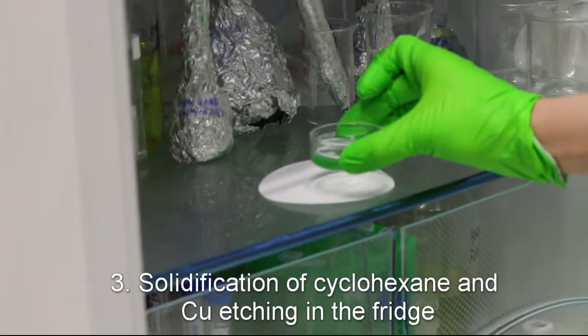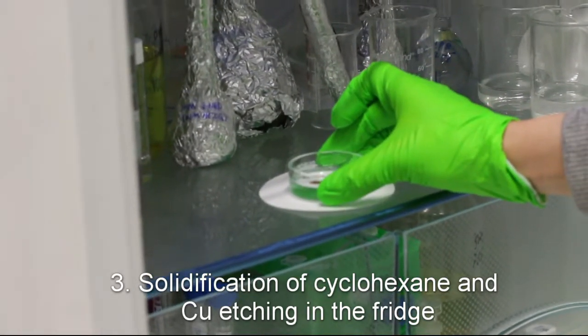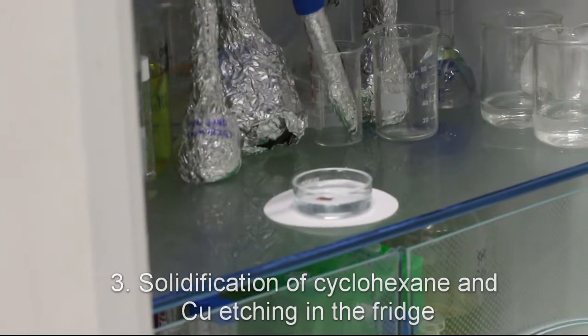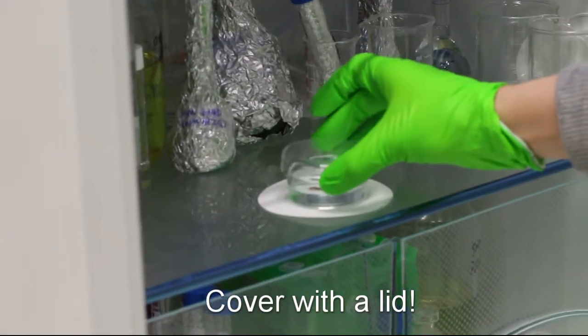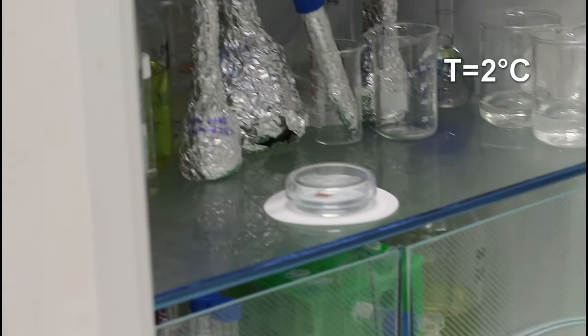For the next step, we put the sample in the fridge at 2 degrees Celsius and cover it with a lid because cyclohexane is very volatile. Melting point of cyclohexane is 7 degrees and of water is zero, so at 2 degrees cyclohexane freezes and water stays liquid.